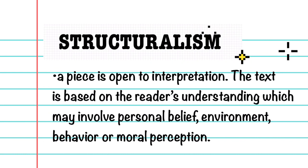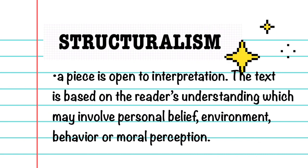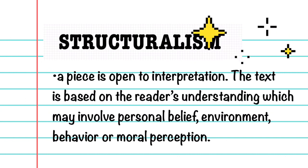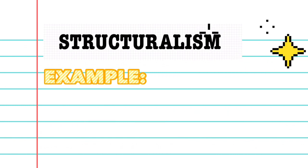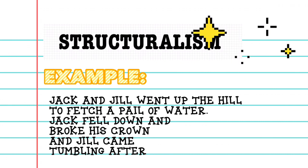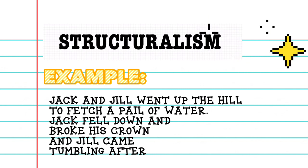So in structuralism, a literary piece may be interpreted in different ways by different readers, because it will be based on how a reader understands a particular piece — based on his or her own perception. For example: Jack and Jill went up the hill to fetch a pail of water. Jack fell down and broke his crown, and Jill came tumbling after.